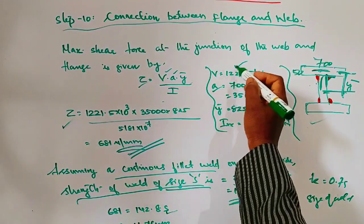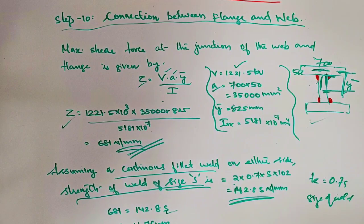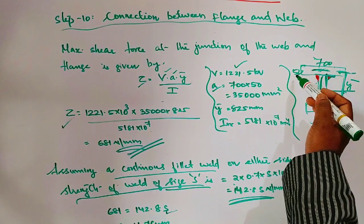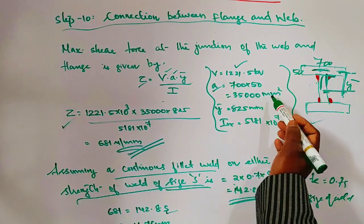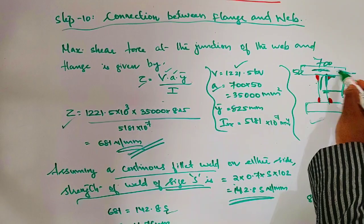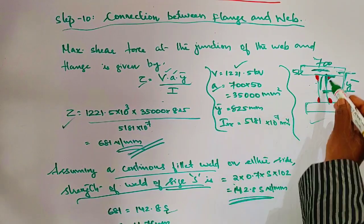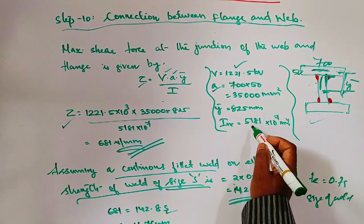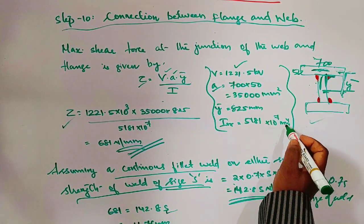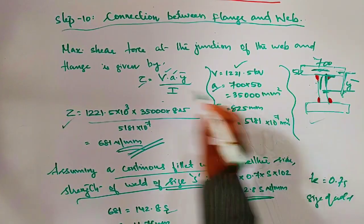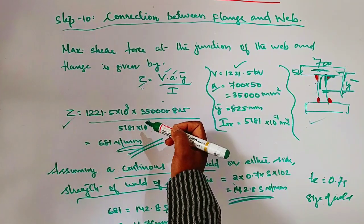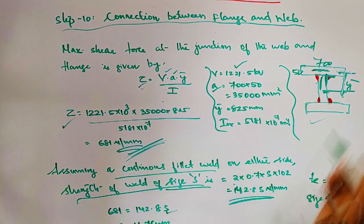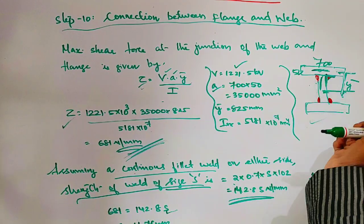In this calculation, V is the shear force equal to 1221.5 kN. The area of the flange is 700 by 50, which is 35,000 mm². The ȳ distance is 825 mm, because the depth of the web is 1600. I_xx is 5181×10⁴ mm⁴. Substituting all these values into the maximum shear force equation, the answer is 681 N/mm.